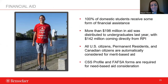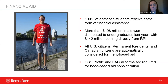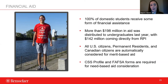Rensselaer offers both need-based and merit-based financial aid. Need-based aid is determined by the FAFSA and CSS Profile. U.S. citizens and permanent residents are automatically considered for merit-based aid based on their application — no additional forms required. There are transfer-specific scholarships available, including a $5,000 Phi Theta Kappa scholarship for members of that honor society, and scholarships available through affiliated institutions.